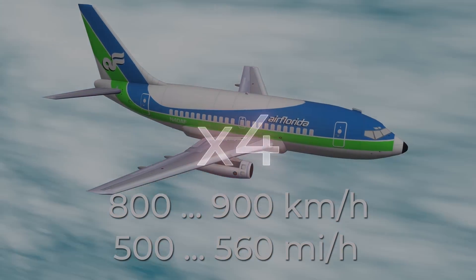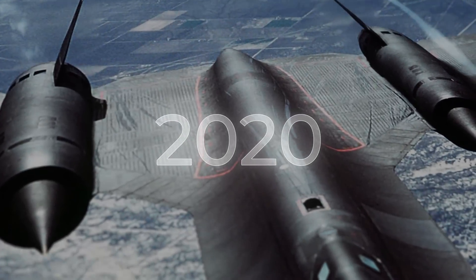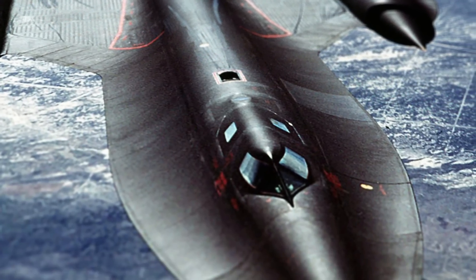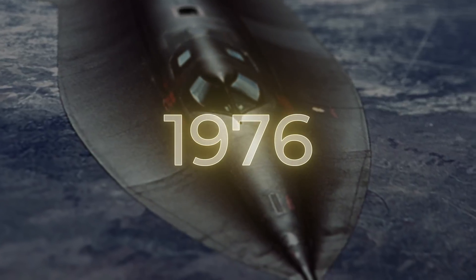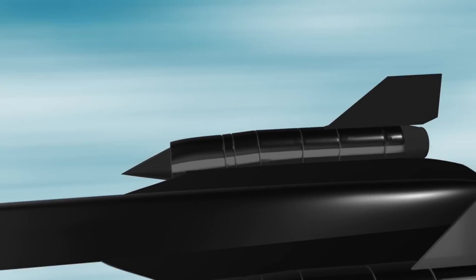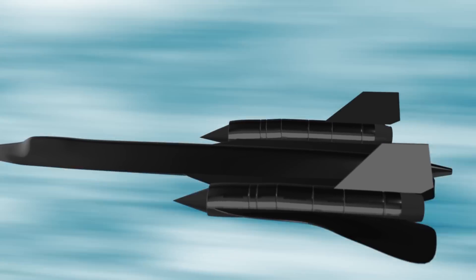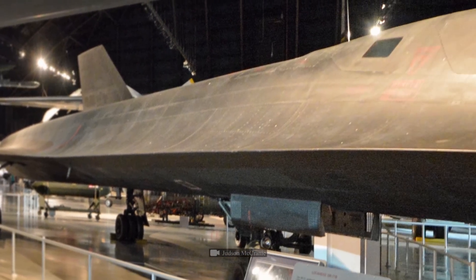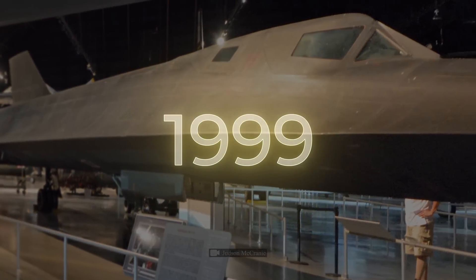As of 2020, the Blackbird continues to hold the world record set in 1976. It's recognized as the fastest manned aircraft with an air jet engine. In general, this title is well-deserved. Unfortunately, the Blackbird was officially retired in the year 1999.